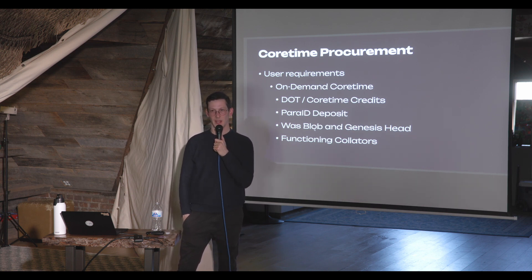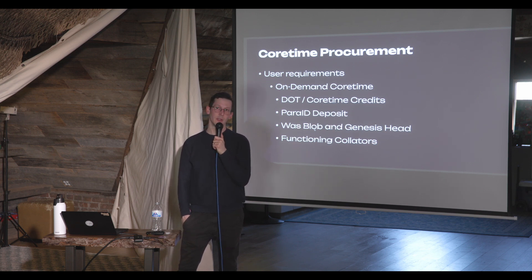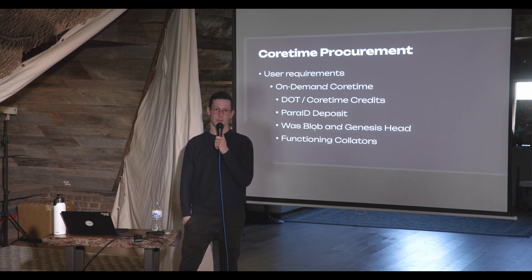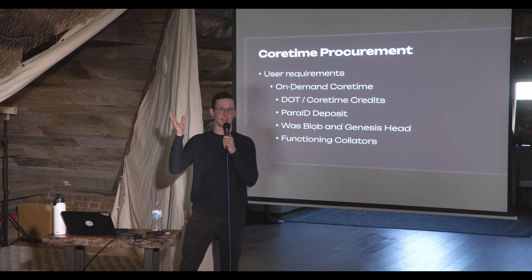If I need block space I would use a separate core. You get one block every six seconds per core. So if Polkadot has about 60 cores right now, that means there are 60 blocks being produced every six seconds. If you own a core, you're not competing — you know you're going to get your block every six seconds for your core.